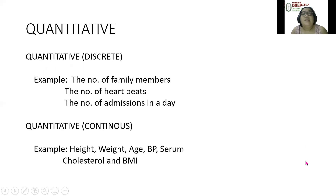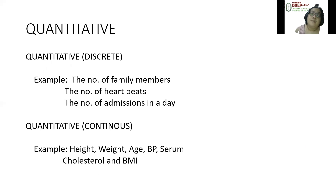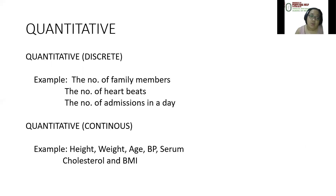If it's quantitative, it could be discrete or continuous. Quantitative discrete would be all whole numbers: the number of family members, number of heartbeats, number of admissions in a day. If it's quantitative continuous, it uses decimal points, such as height, width, age, blood pressure, serum cholesterol, and BMI.